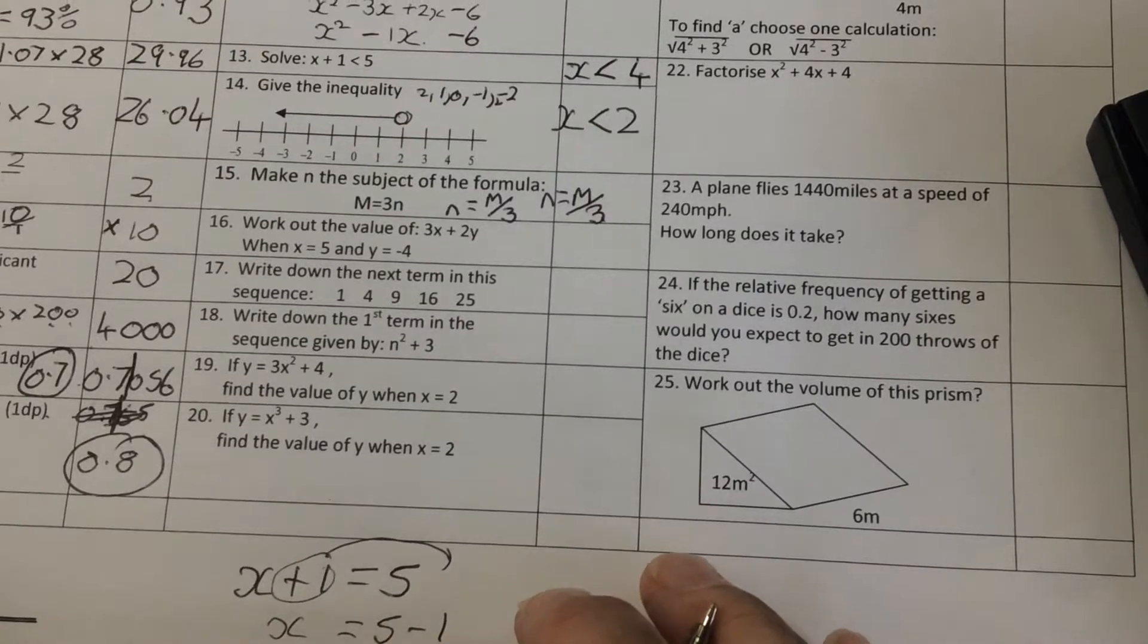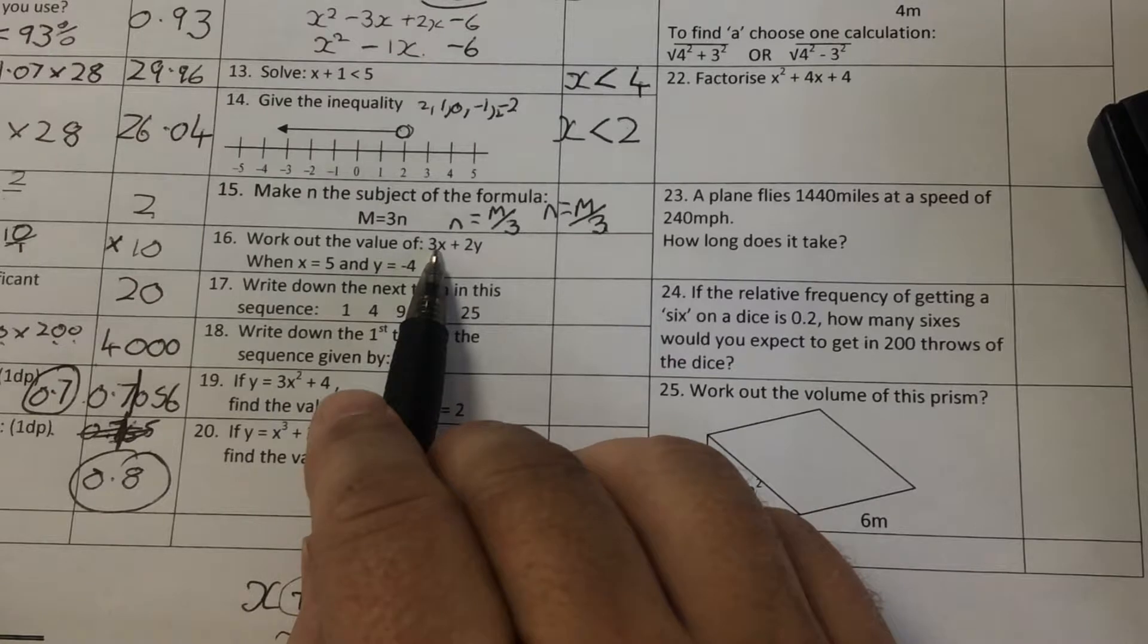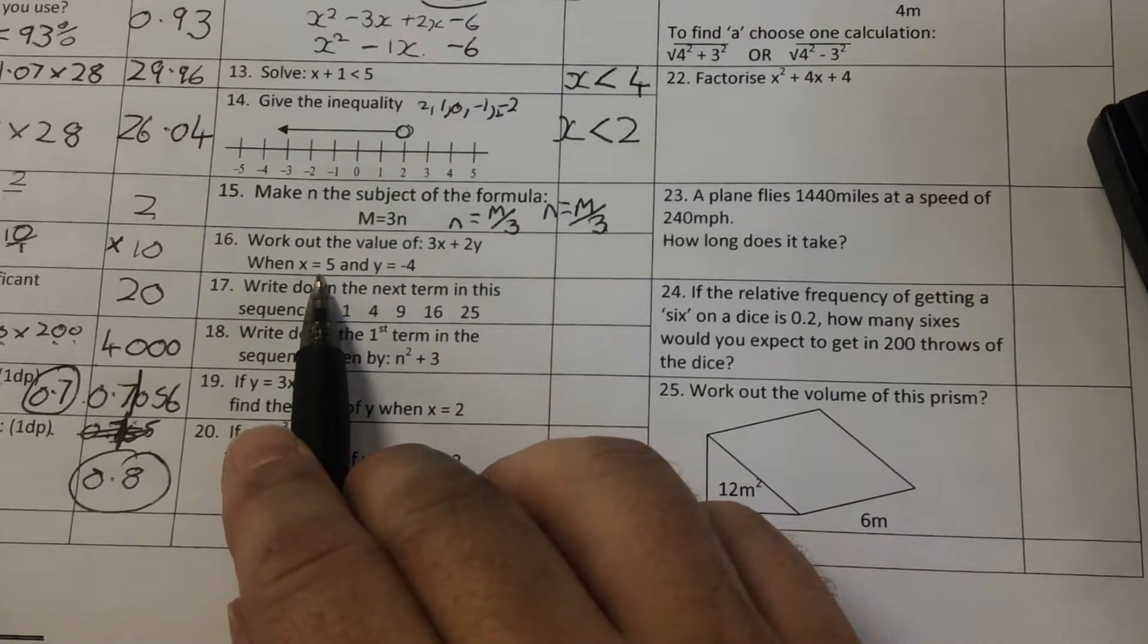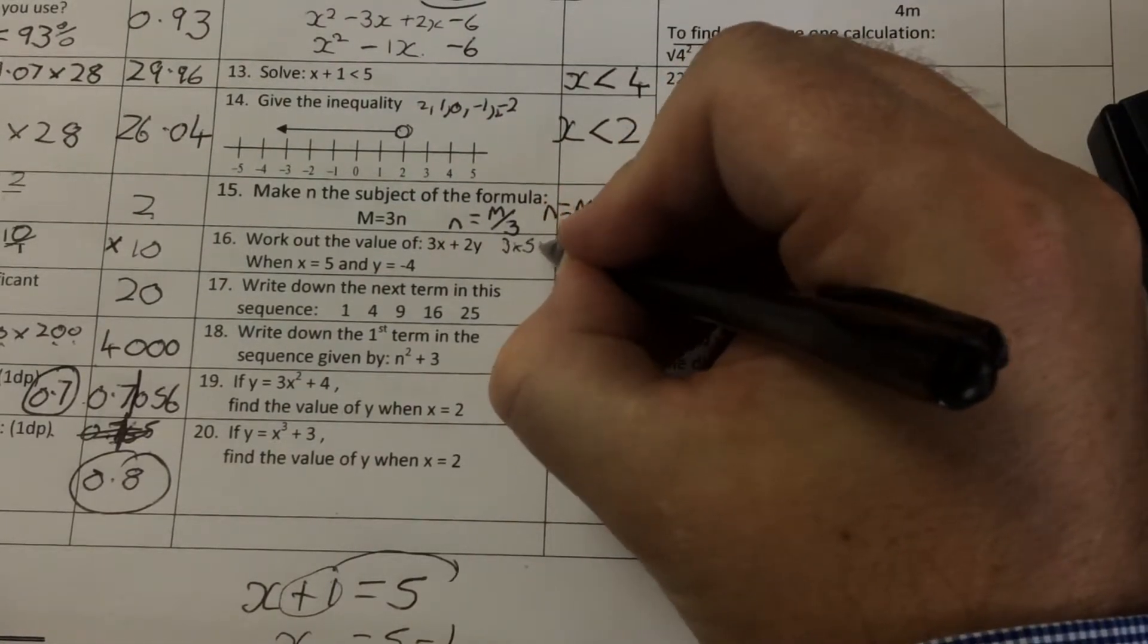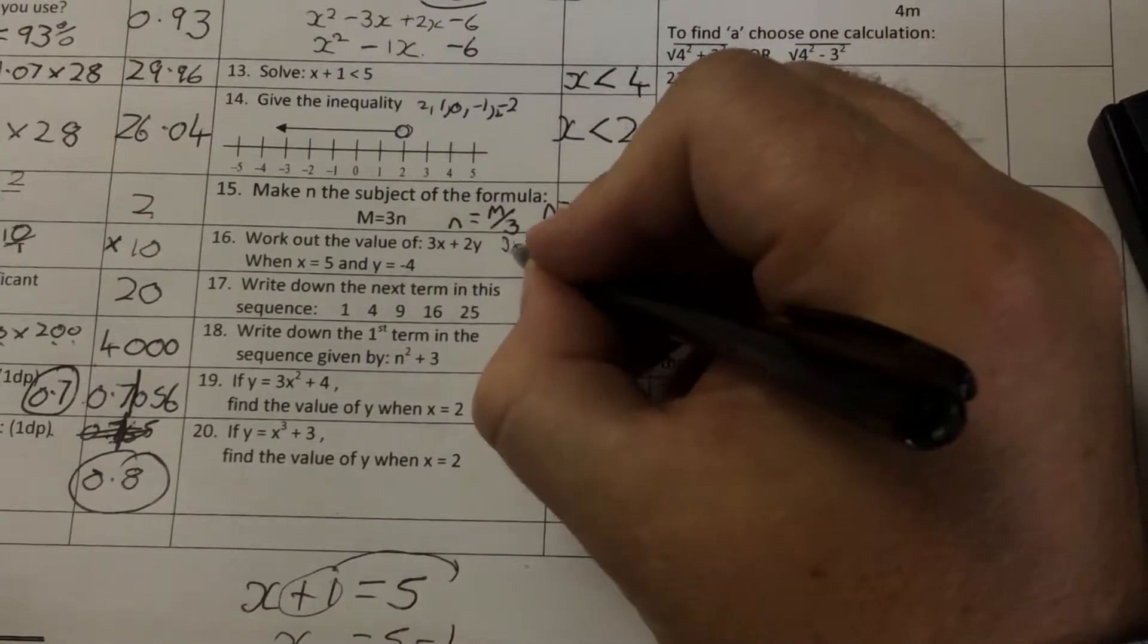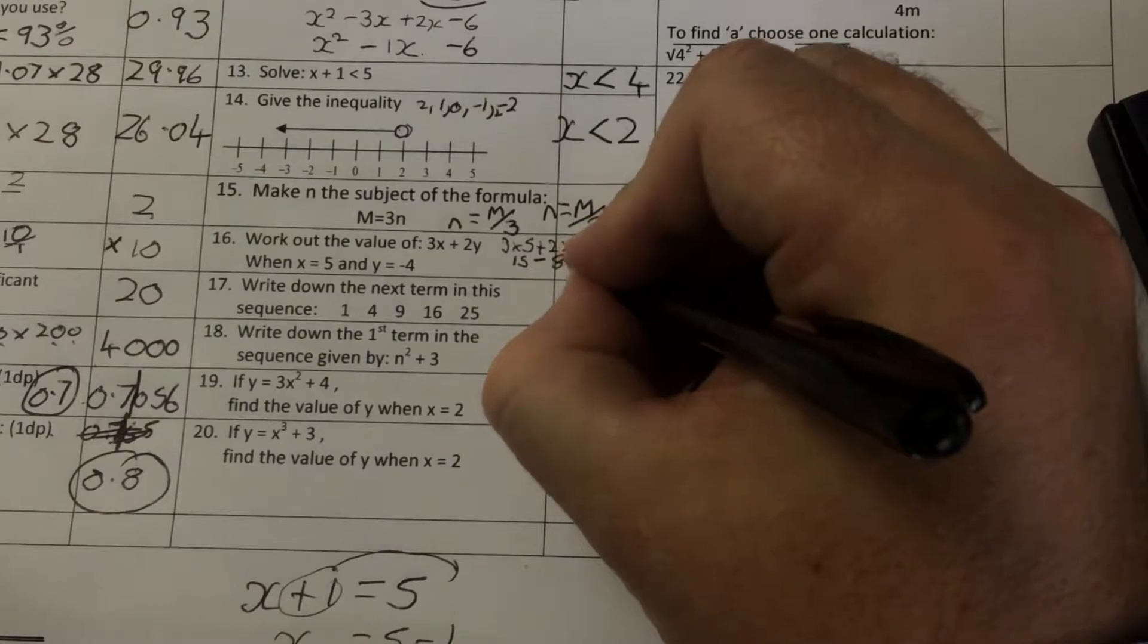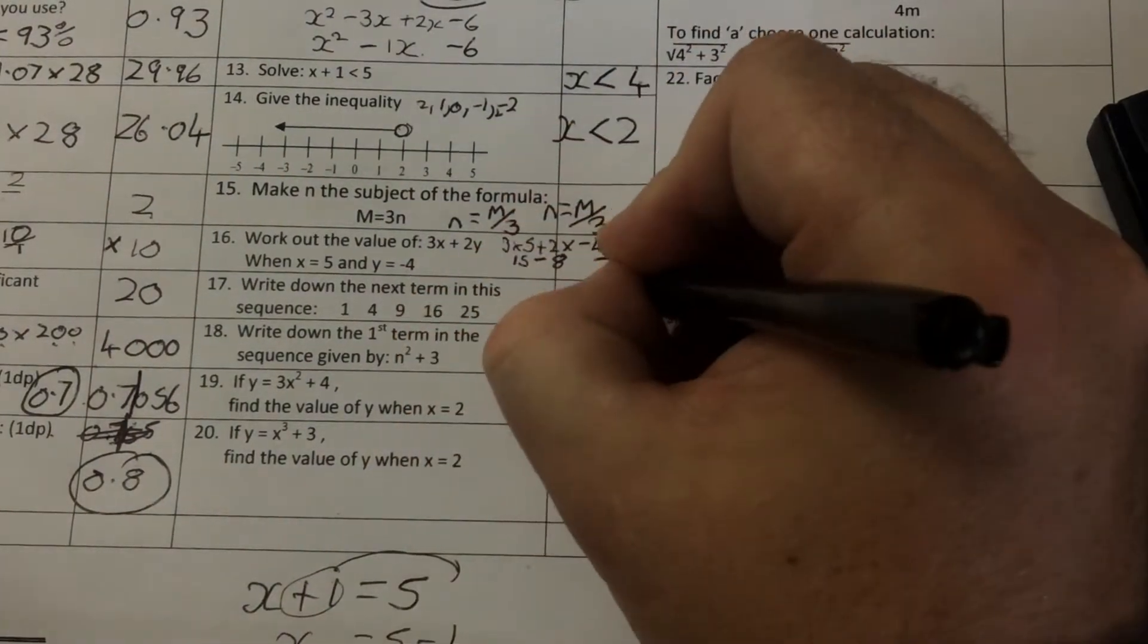When I'm working out the value of 3 times x plus 2 times y, 3 times x. x is 5. So I've got 3 times 5 plus 2 times minus 4. 3 fives are 15. 2 minus 4s are minus 8. And I've got 15 take away 8. 15 take away 8 is just 7.